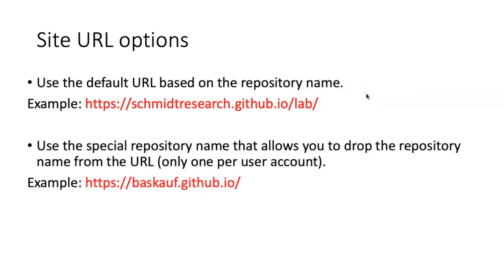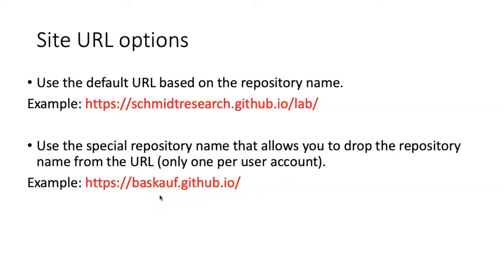It turns out that there is one special repository name that you can use which will allow you to simplify the URL by dropping off the repository part. The name of that repository is the name of your account followed by github.io. Obviously there's only one repository you can create with that name within your account, and that's the one that will be used for this special URL.